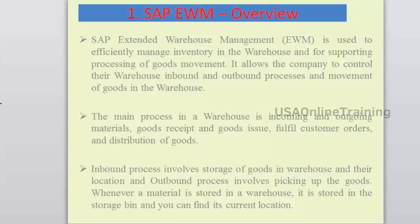If the storage location is managed with WM or EWM, the physical address of the product is known. With that, the picker can go directly to that bin or storage type, pick the product very easily, and deliver to the customer quickly because the address is known.